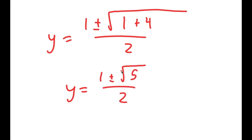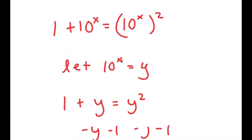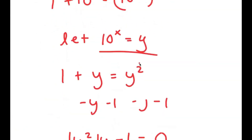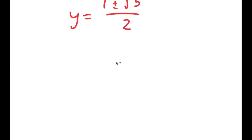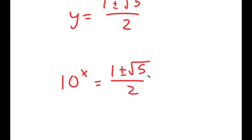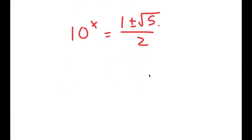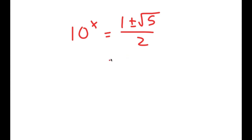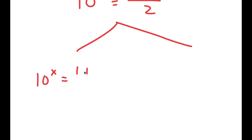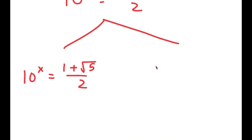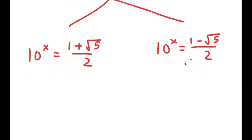So I get that the value of y is equal to 1 plus or minus the square root of 5 over 2. However, we aren't done yet, because remember we're solving for x and not y. We let 10 to the power of x equal to y. So I get 10 to the power of x equals 1 plus or minus the square root of 5 over 2. I'll first start with 10 to the power of x is equal to 1 plus the square root of 5 over 2.